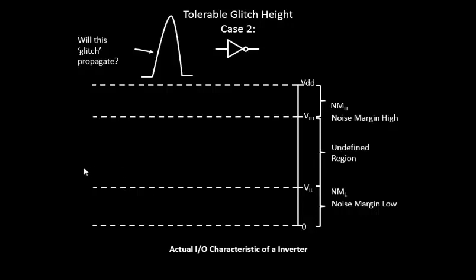whether this glitch will now propagate or not. Okay, so when we place this glitch over here, if you see, the peak height of this particular glitch, or the voltage level of this particular glitch, exceeds the input low voltage. And now the peak falls in the undefined region, and in the undefined region we say that we